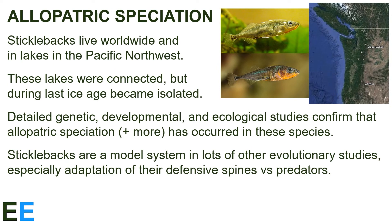The last example of allopatric speciation involves a group of fish called sticklebacks. Sticklebacks live worldwide and in lakes in the Pacific Northwest. These lakes were once connected, but during the last ice age became isolated. Detailed genetic, developmental, and ecological studies confirm that allopatric speciation, and more, has occurred in these species. In fact, sticklebacks are a model system in lots of other evolutionary studies, especially the adaptation of their defensive spines versus predators. For example, some lakes have predators and some don't, and the sticklebacks have evolved their spines accordingly.